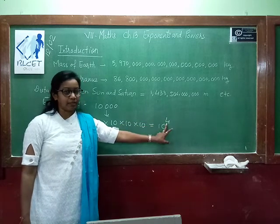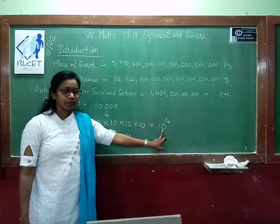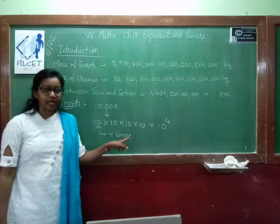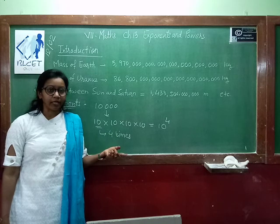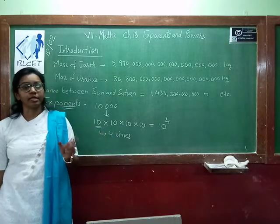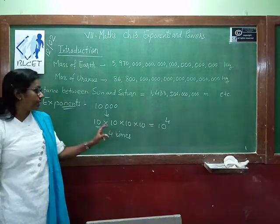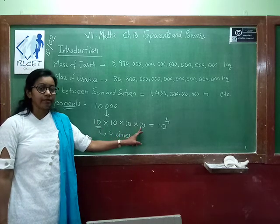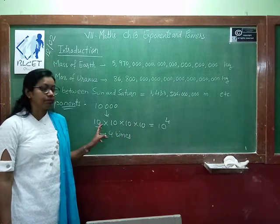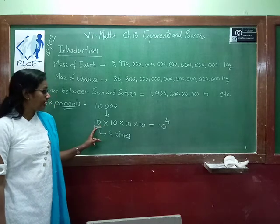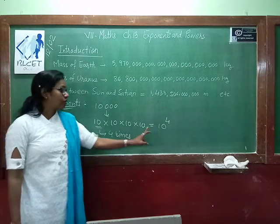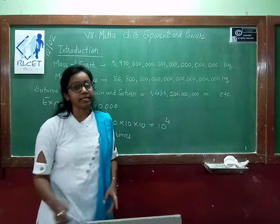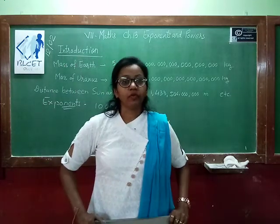So this 4 means what? This is your exponent and this is your base. Any number which multiplies itself — how many times it multiplies — that gives you the concept of exponent. Here 10 is repeated 4 times, so we write it as 10 power 4, or read it as 10 raised to 4.